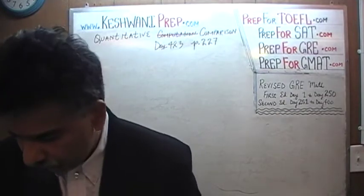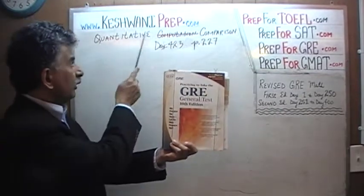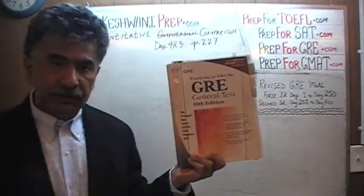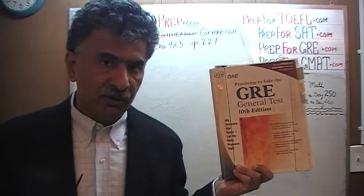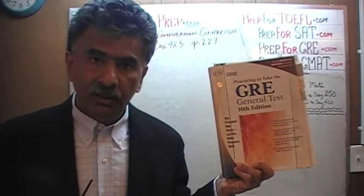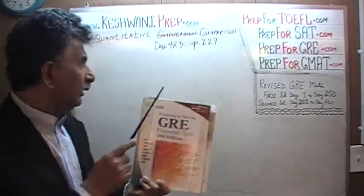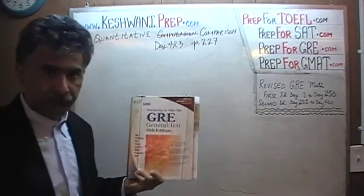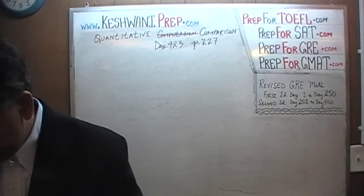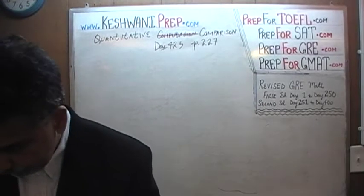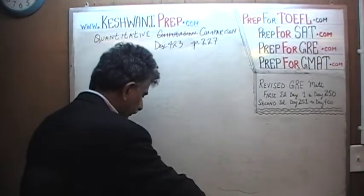Right now, we are solving problems out of this book, quantitative comparison questions, out of the 10th edition of the general GRE, because the revised GRE books simply do not contain enough quantitative comparison questions. So to get some extra practice, we started solving problems from here, from day number 401. Right now, we are on page number 227. Problem number 9, the penultimate problem on the page, the second to the last problem.